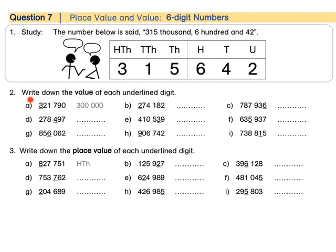Number 2. Write down the value of each underlined digit. Now remember, value tells us how much a digit in a number is worth. So this 3 is in our hundred thousands place value column. Its value is 300,000. Three hundred with a gap and then three zeros for thousand.